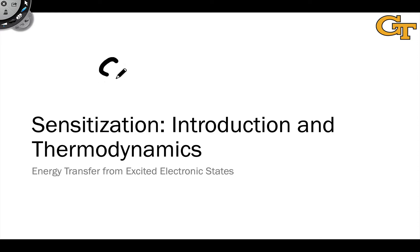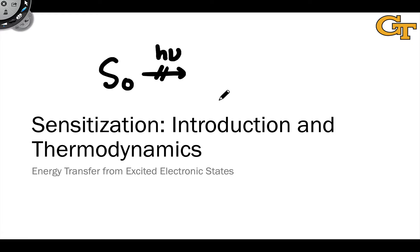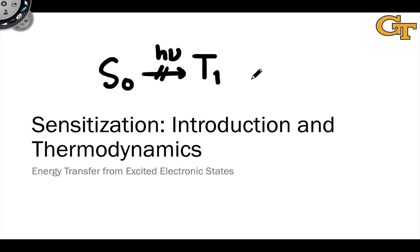Based on our earlier discussion of the quantum mechanical selection rules, we can conclude that there are some excited states that are just impossible to reach via direct excitation or absorption of a photon from the ground state. A good example is the T1 state of many structures, alkenes in particular, where the S1-T1 energy gap is very large. We're often very interested in the reactivity or properties of the triplet states of alkenes and other inaccessible excited states, and so this raises the question: is there a way to access these excited states without direct excitation?